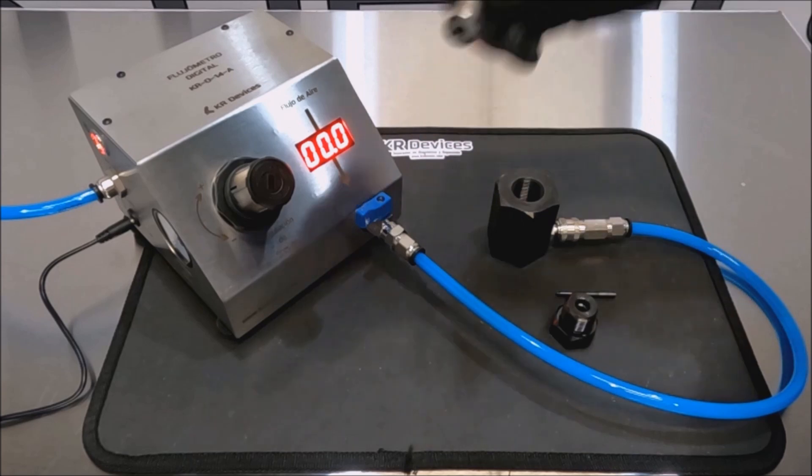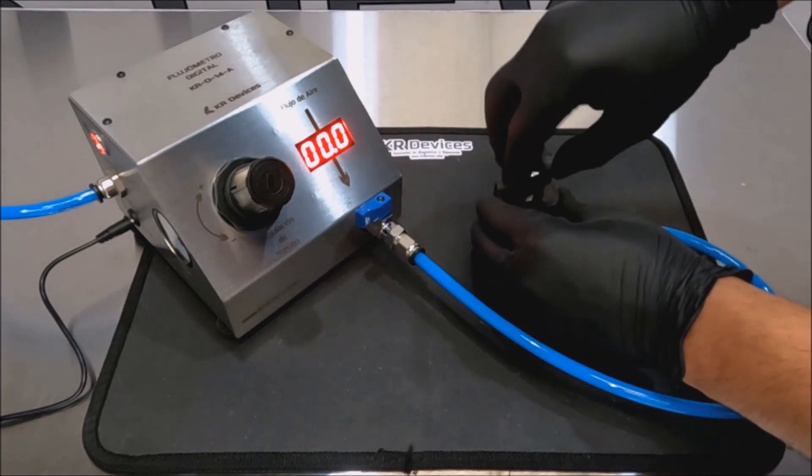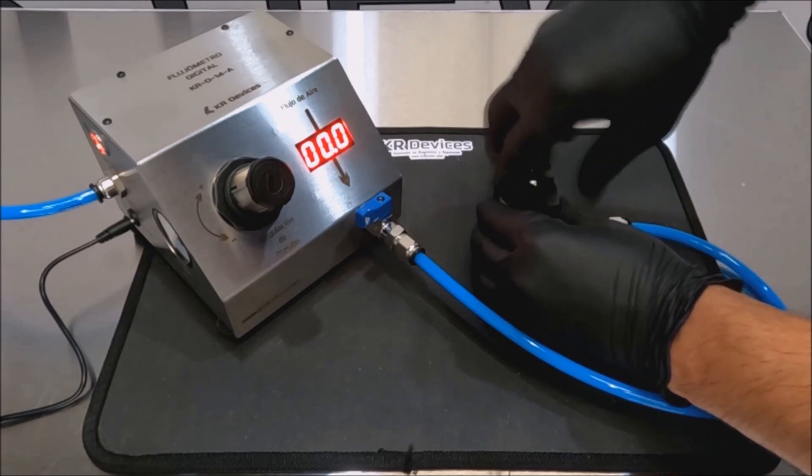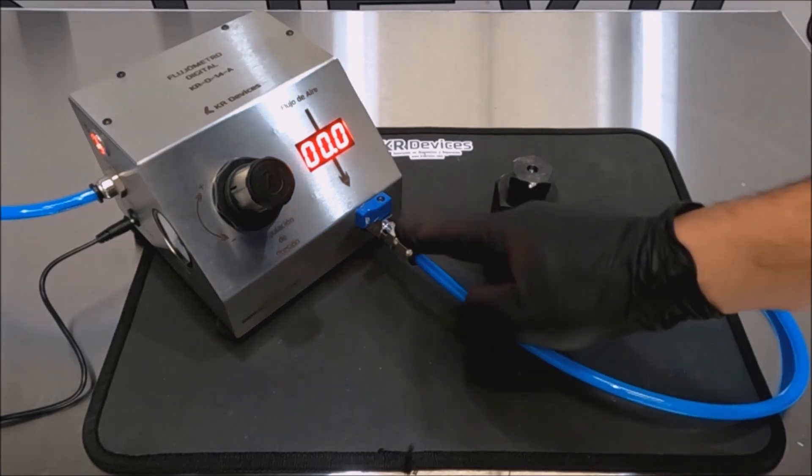Then place the nozzle on the adapter and fasten it by screwing the 7 or 10 millimeter piece on the adapter. Then we proceed to open the outlet valve to obtain the measurement.